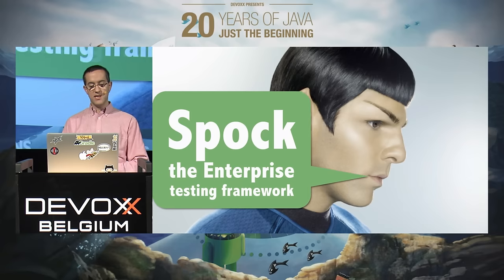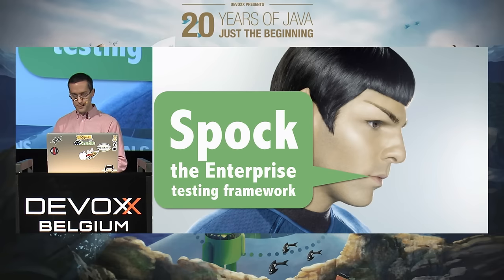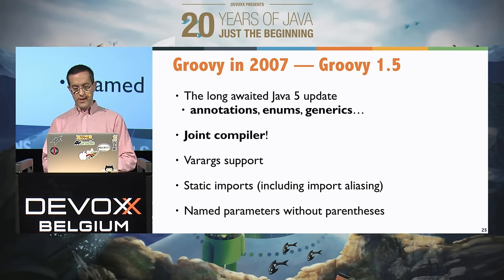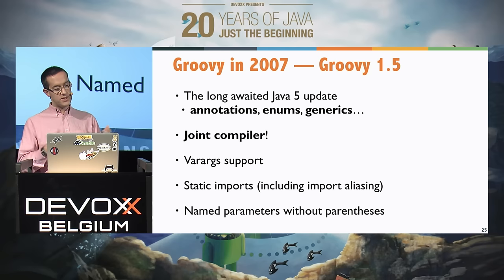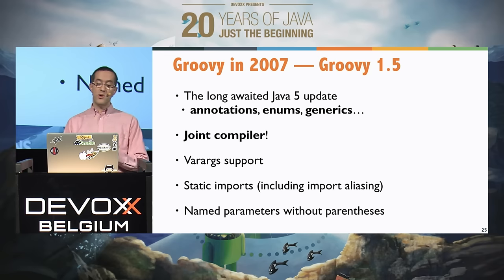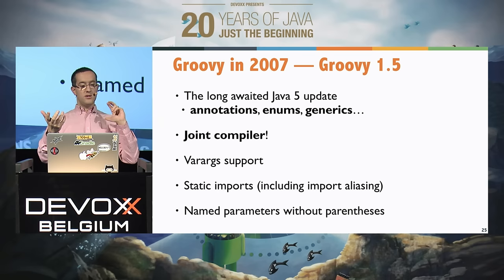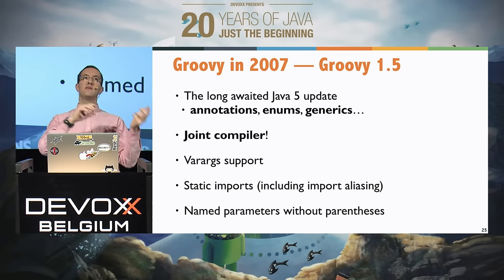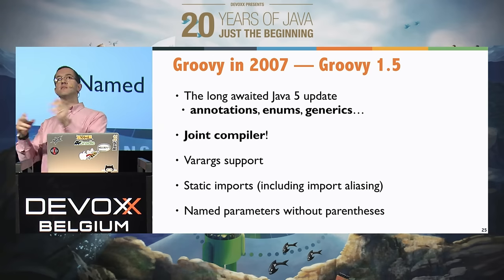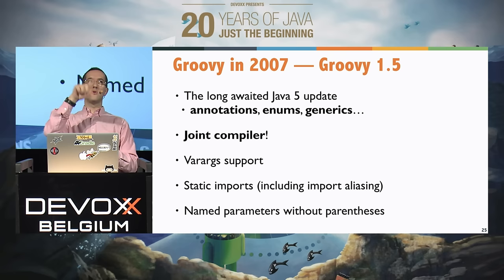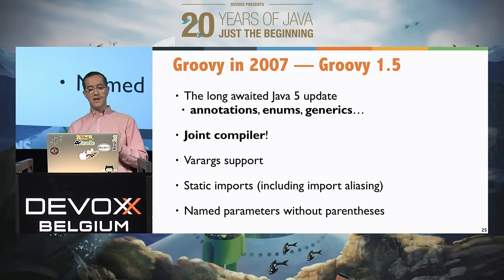2007 was quite a busy year: that was also when the Spock testing framework was conceived. We released Groovy 1.5 with long-awaited Java 5 support — annotations, enums, generics, etc. That's also when we released the joint compiler, so you can joint compile Java and Groovy sources at the same time, mixing Java interfaces implemented in Groovy and extended in Java, and even circular language dependencies between classes and interfaces.